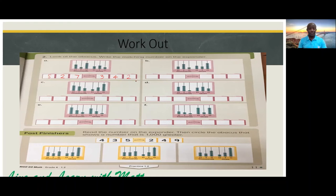Part B: Let's use this abacus to represent this number. So we can represent it with three hundred and sixty-two thousand, four hundred and thirty-seven.